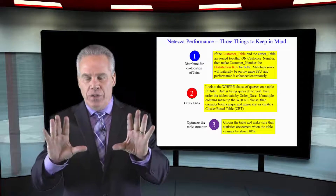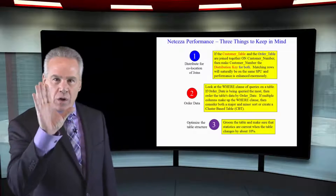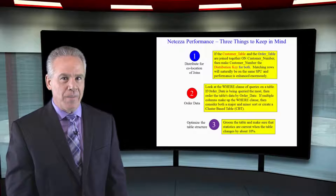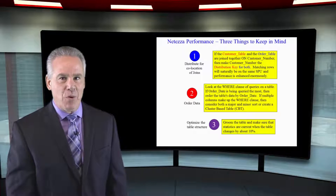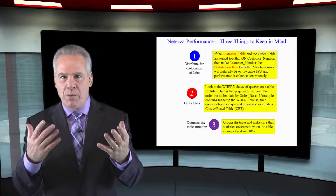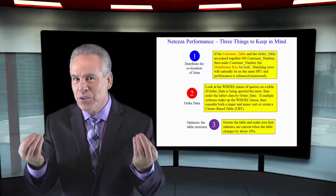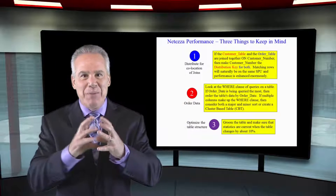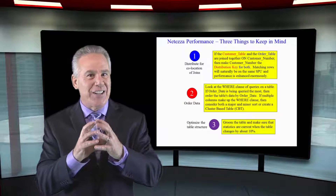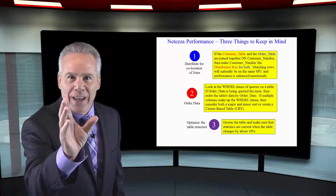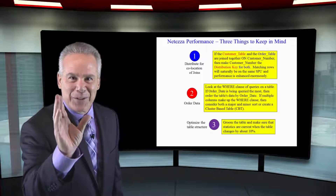We'll get into that in full detail. But when thinking about distribution keys, the best thing you can consider is how the customer table joins to the order table where customer number equals customer number. If you make the distribution key customer number on both those tables, this is going to be the fastest join possible because the rows are co-located on the same SPU.